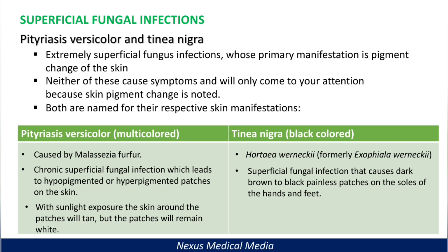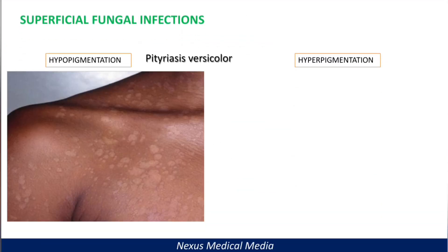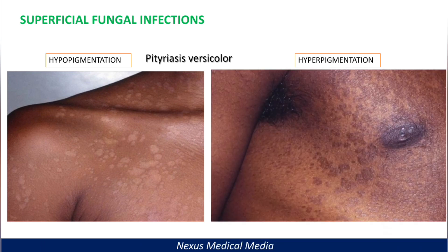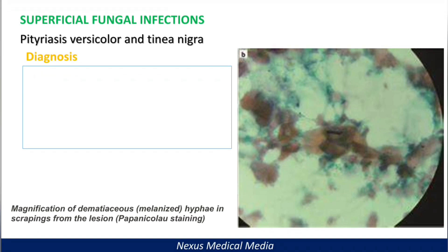Here is an image of pityriasis versicolor — you can see hypopigmentation on your left and hyperpigmentation on your right. Next is tinea nigra: you can see hyperpigmented macules on the palm, as shown here.